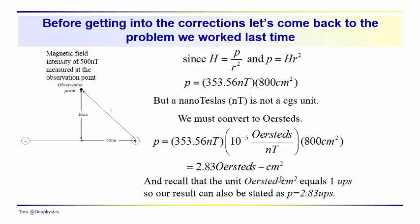The basic unit for pole strength is Oersteds centimeters squared, but we should also remember that an Oersted centimeter squared is equal to one UPs. So our answer of 2.83 Oersteds centimeters squared is correct — we could also say that it was 2.83 UPs. I just wanted to come back and make that comparison of units.